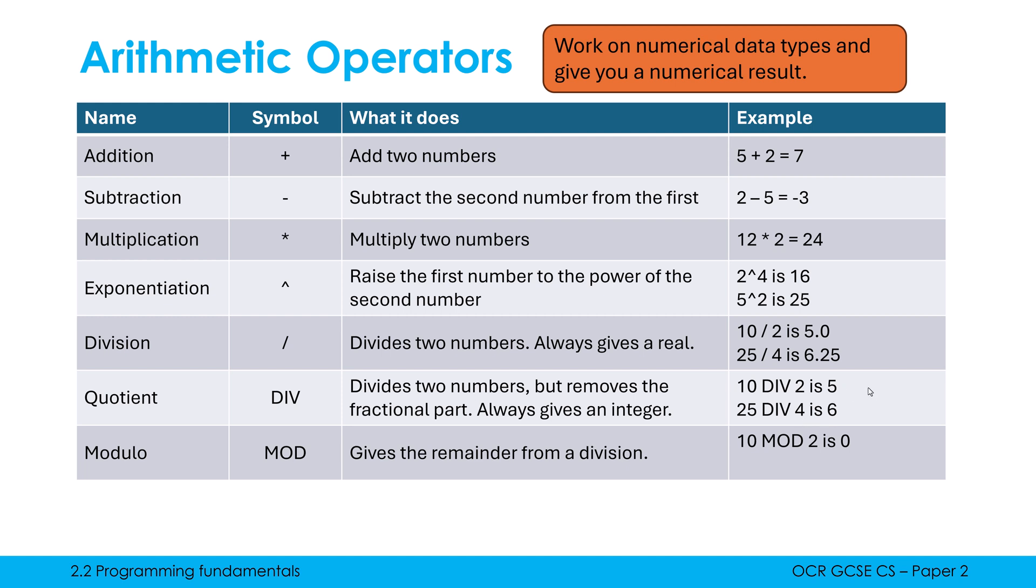To use the same example again, 25 MOD 4, we've used it in the previous two boxes, is 1. People often think MOD is what DIV discarded. So DIV discarded 0.25, that's not what MOD gives us. 0.25 is not our remainder. If I did 0.25 times 4, I get my remainder.